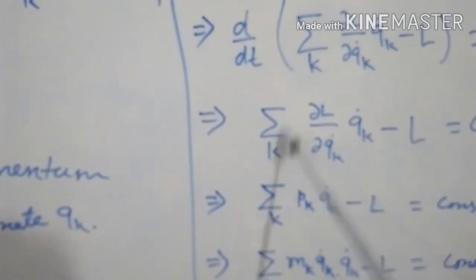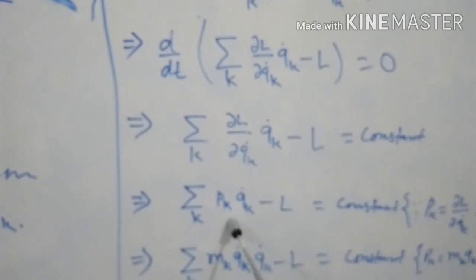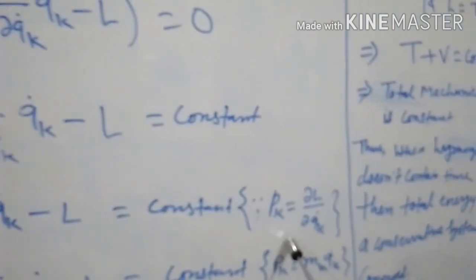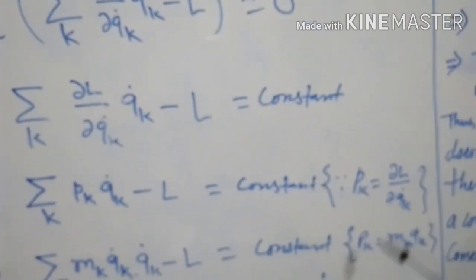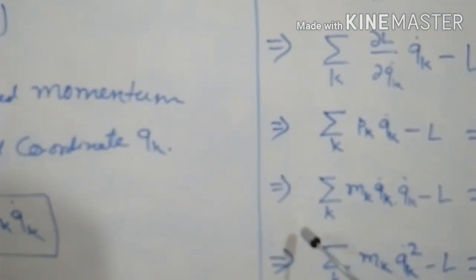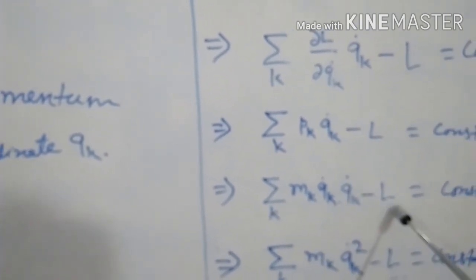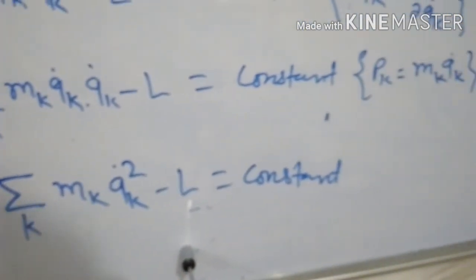Since del L upon del QK dot is equal to PK, we replace del L upon del QK dot by PK. That implies summation K of PK QK dot minus L equals constant. Since PK equals Mk QK dot, this becomes summation K of Mk QK dot times QK dot minus L equals constant, which gives summation K Mk QK dot squared minus L equals constant.